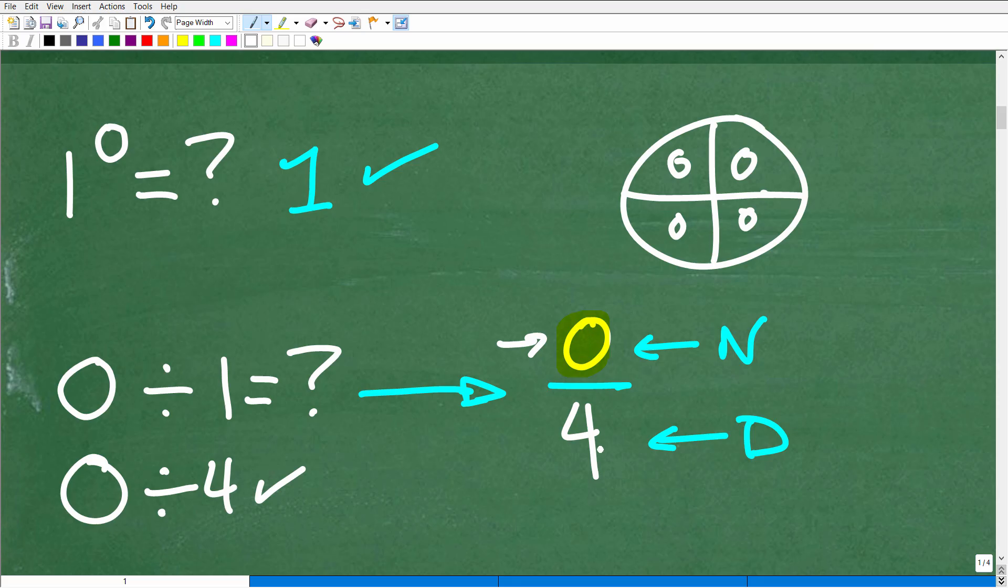If we're going to take nothing and split it up four different ways, we're all going to get nothing. So zero divided by any number, okay, except zero, right? Now that's an exception. We'll talk about that next.